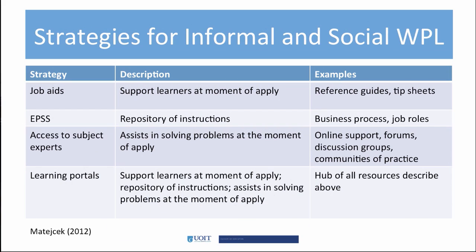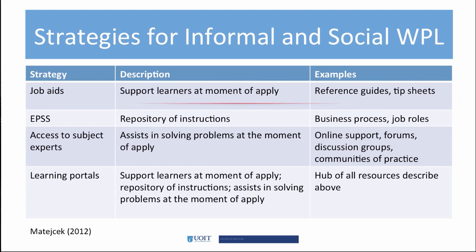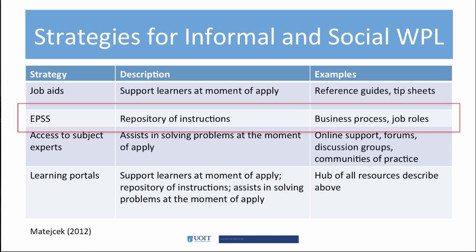There are a number of strategies used for informal and social workplace learning. Job aids are often used to support learners at the time they need it — this is just-in-time learning. EPSS, which is an acronym for Electronic Performance Support Systems, is an electronic repository where workers may find information, guidance, and tools to do their job. EPSS is not online help or e-learning, but instead a vast catalog of knowledge that is available to workers when they need it.